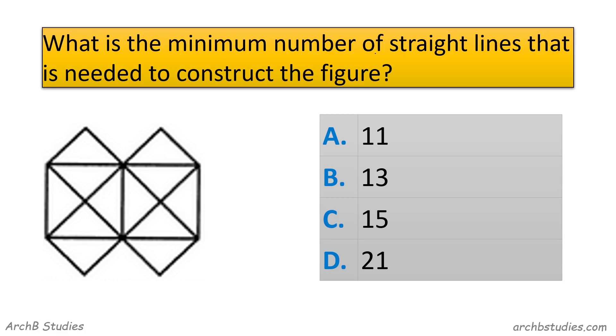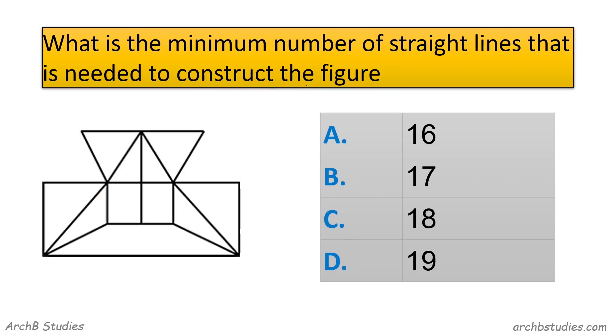What is the minimum number of straight lines needed to construct this figure? We have like this. So 4, 5, 6, 7, 8, 9, 10, 11, 12, 13. So 13 is the correct answer. So next is also same.